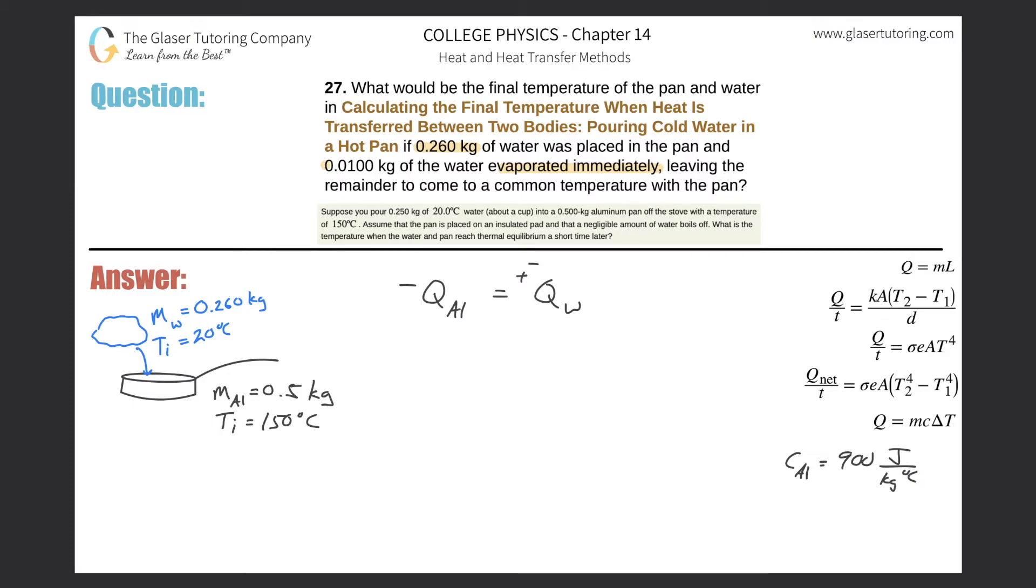We have to realize there are actually two ways that the water is absorbing heat. One way is by increasing the temperature from 20 to whatever the final temperature will be (somewhere less than 100), and then also to evaporate this mass. This is similar to the prior problem, so check that one out too. Q of the aluminum will equal the heat absorbed by the water going from 20 degrees to less than 100, plus the energy required to cause it to vaporize.